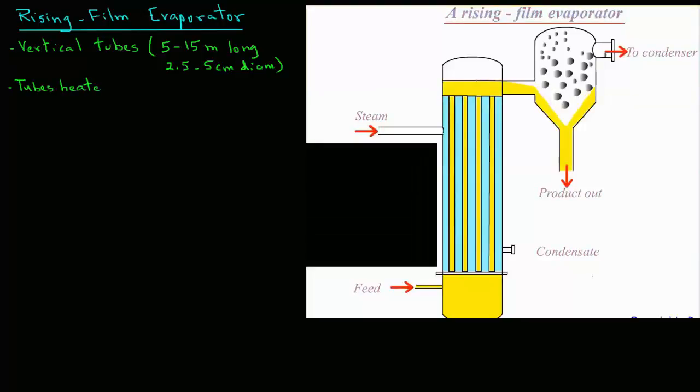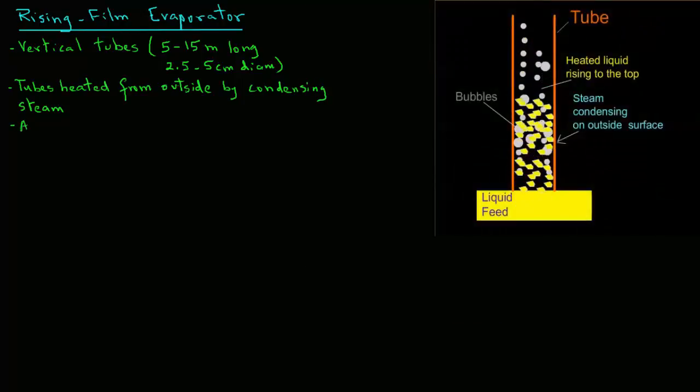The liquid inside the tubes is heated from the outside by condensing steam, as we see in this animation. As the liquid at the bottom of the tube heats,